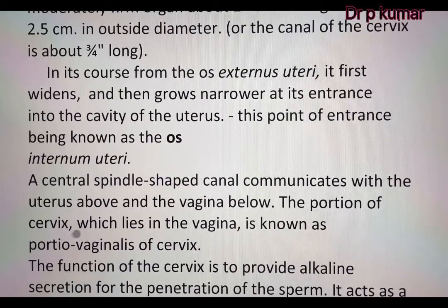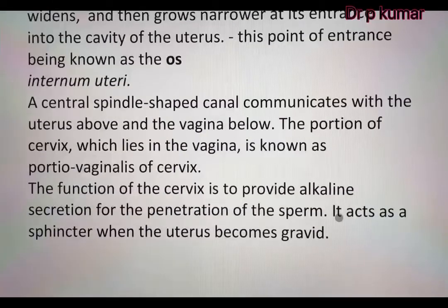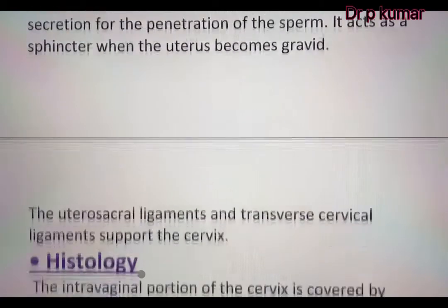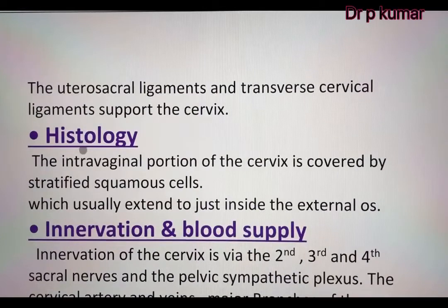The portion of the cervix which lies in the vagina is known as the portio vaginalis of the cervix. The function of the cervix is to provide alkaline secretion for the penetration of the sperm. It acts as a sphincter when the uterus becomes gravid. The utero-sacral ligament and transverse cervical ligament support the cervix.